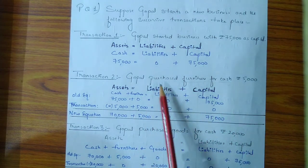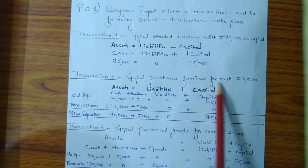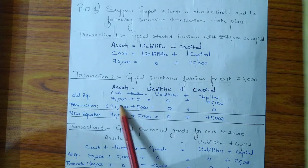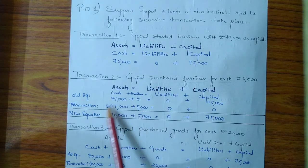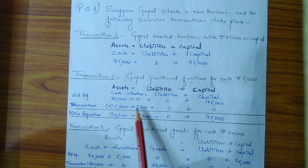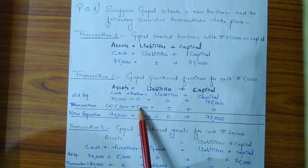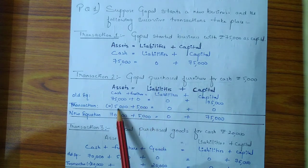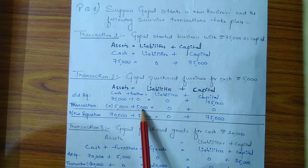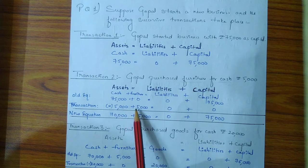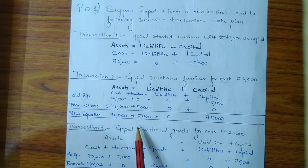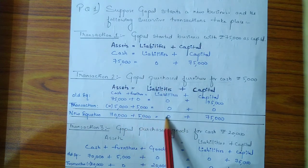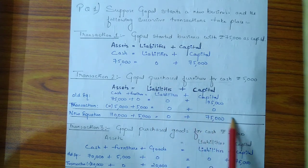Since furniture is purchased for cash, ₹5,000 is deducted from cash and the new asset — furniture — is increased by ₹5,000. The new equation becomes: Cash ₹70,000 (75,000 − 5,000) + Furniture ₹5,000 = Liabilities ₹0 + Capital ₹75,000.